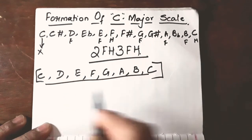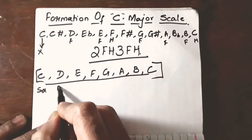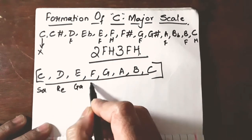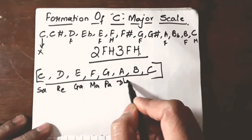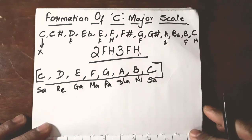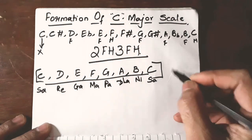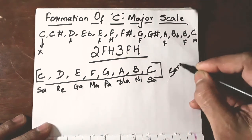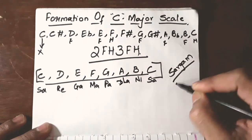This is known as Sa, Re, Ga, Ma, Pa, Dha, Ni and Sa in Indian musical system. In short form, it is known as Sargam.